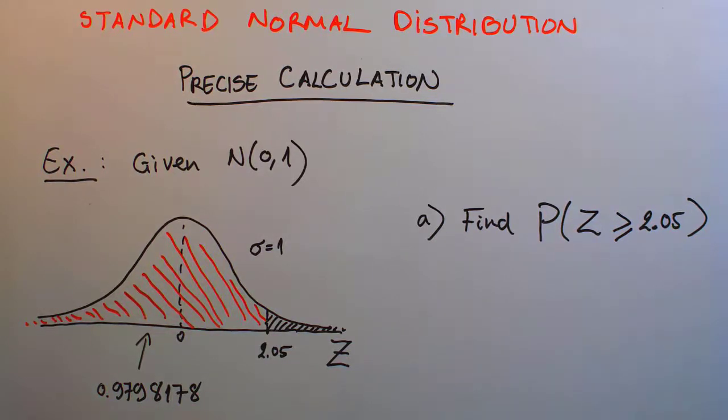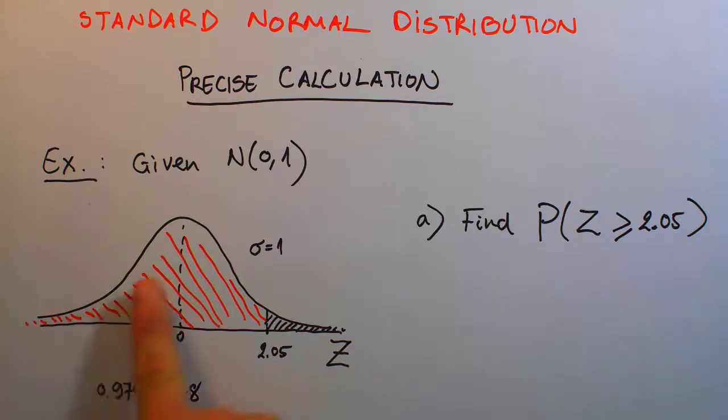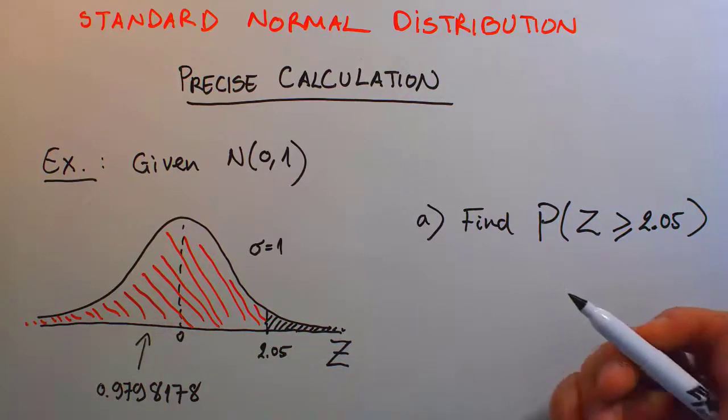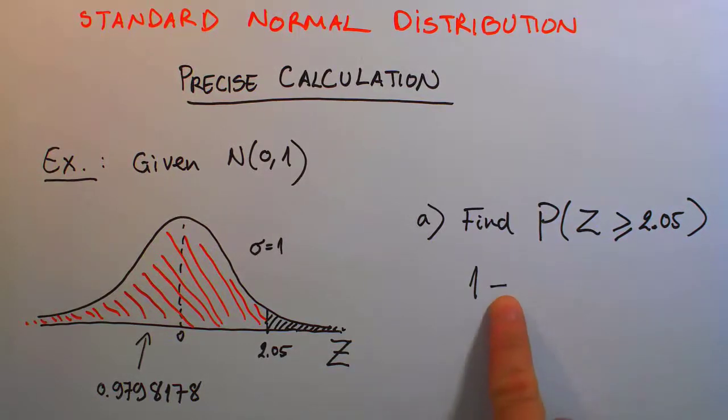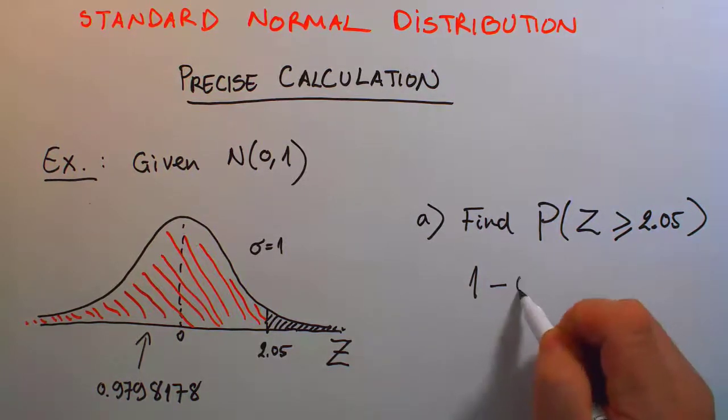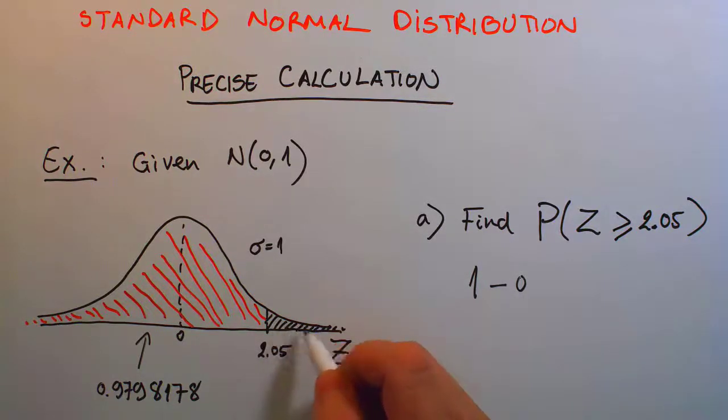That looks pretty reasonable, but keep in mind, this is not our answer. It's only the area shaded to the left hand side. The entire accumulated area on this bell curve, including the red and the black together, is totally 1. We're looking for the little black area outside of the red area. So 1 is the total accumulated area, and I'm going to subtract 0.9798178 from 1.